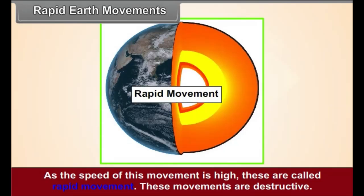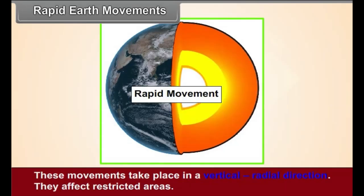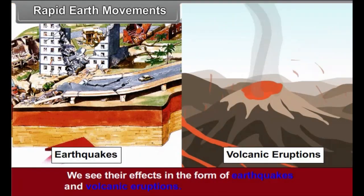These movements are destructive. These movements take place in a vertical, radial direction. They affect restricted areas. We see their effects in the form of earthquakes and volcanic eruptions.